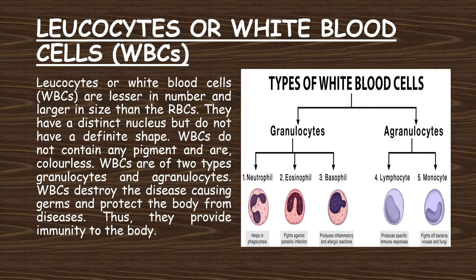Neutrophil helps in phagocytosis. Eosinophil fights against parasitic infection. Basophil produces inflammatory and allergic reactions. Lymphocyte produces specific immune responses. Monocyte fights off bacteria, viruses and fungi. WBCs destroy disease-causing germs and protect the body from diseases, thus providing immunity to the body.